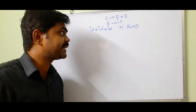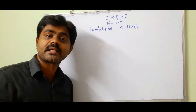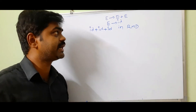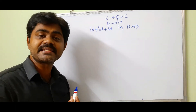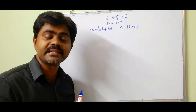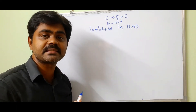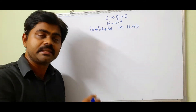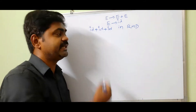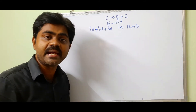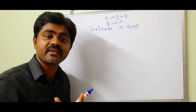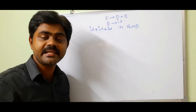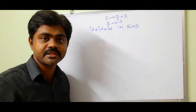We'll see an example to get a clear idea about handle pruning. Consider a grammar: E → E plus E, and E → ID. We are given a string ID plus ID plus ID in rightmost derivation.